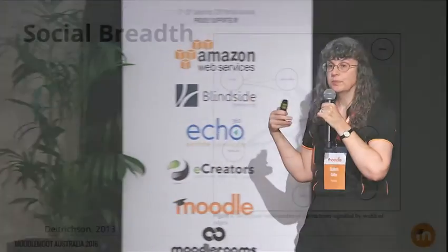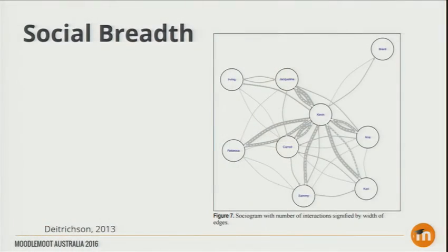We also look at social breadth. Here's an example of a sociogram from work by Dietrichsen in 2013 — very interesting research about how people connect with each other in a discussion and how that influences their achievement in the course. These are probably going to be factors worth looking at as well — the cognitive depth and social breadth that we think will probably be worth tracking.